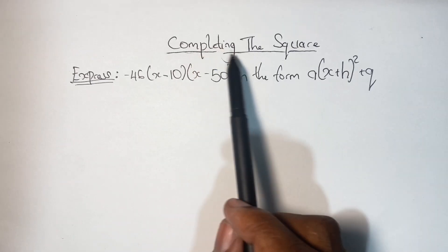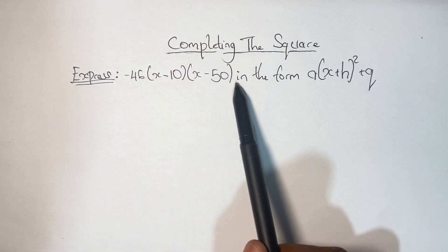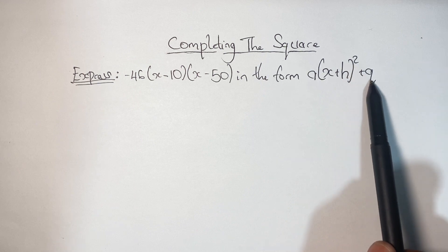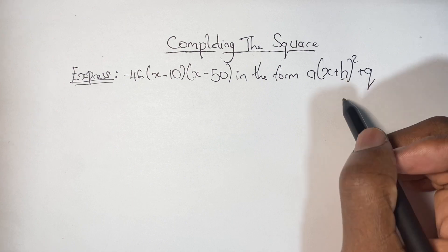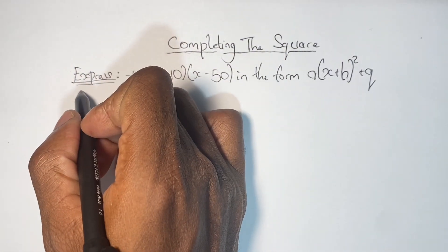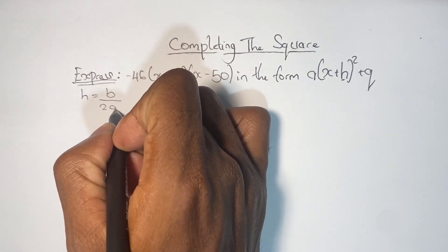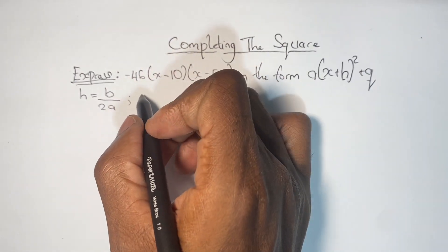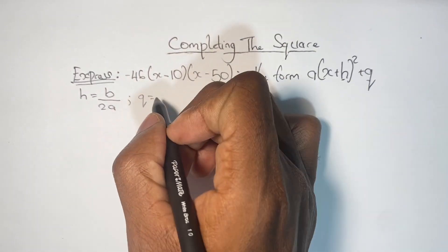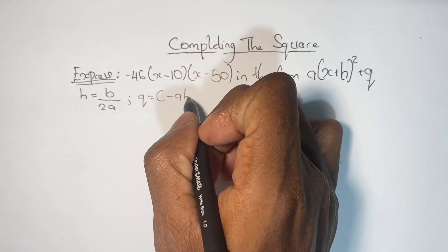So let's just dive straight into our lesson. This question asks us to express the product of negative 46 and this quadratic expression in the form of A times (X + H)² + Q. We're going to solve this problem by finding the values of H and Q. H is given in the form B over 2A. Q will tell us our minimum or maximum value, and Q is given in the form C minus the product of A times H squared.